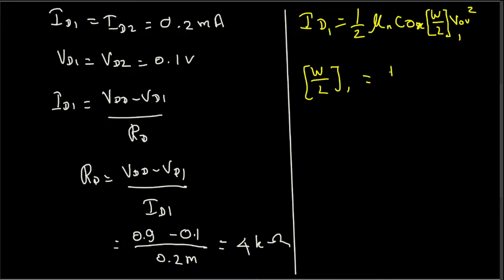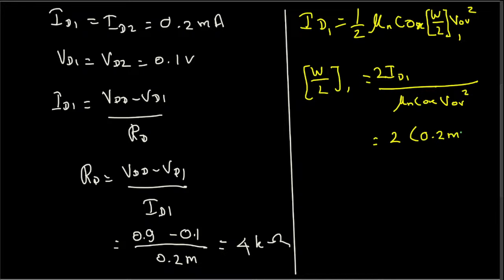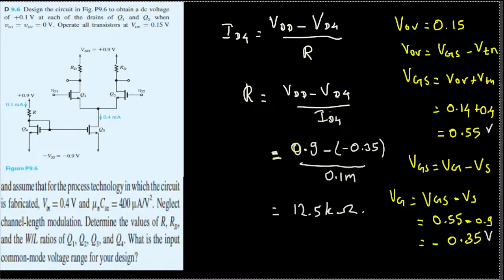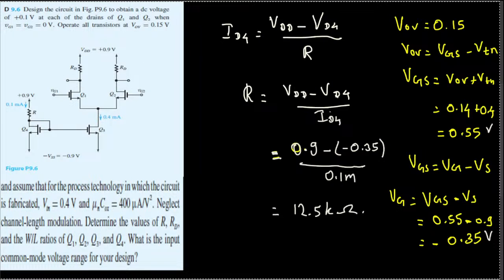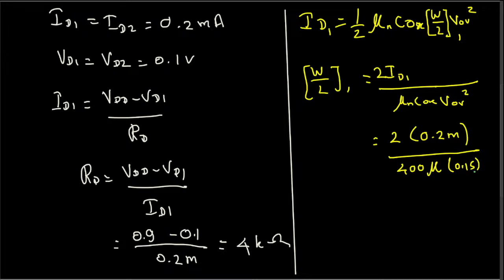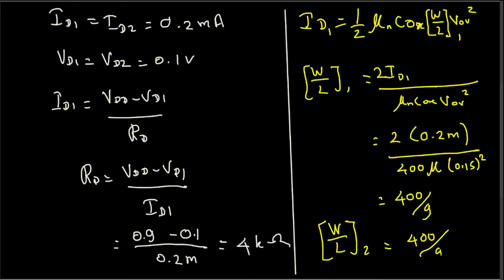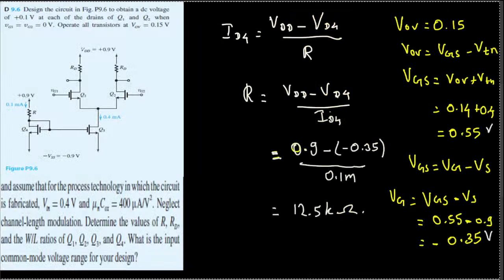For ID1 equals 0.2 mA, rearranging gives W/L1 equals 2·ID1 divided by (μnCox·VOV²) equals 2×0.2 mA divided by (400 μA/V² × 0.15²) equals 400/9. Since Q1 and Q2 are matched, W/L2 equals W/L1 equals 400/9.